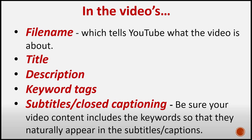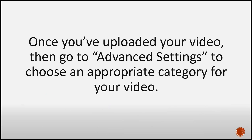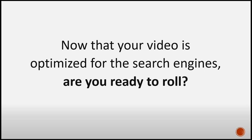Provided you can insert your keywords naturally, here are some places to embed them: in the video's file name, which tells YouTube what the video is about; in the video's title, description, keyword tags, subtitles, or closed captioning — just be sure your video content includes the keywords so that they naturally appear in the subtitles or captions. Once you've uploaded your video, go to Advanced Settings to choose an appropriate category for your video.